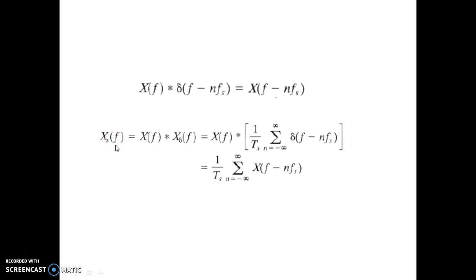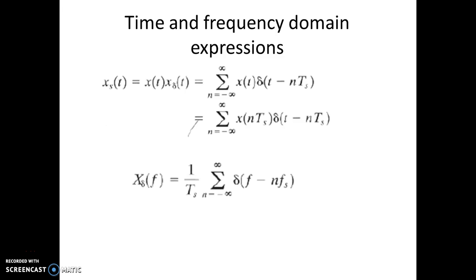xs(f) is the sampled signal—that is equal to x(f) convolution x_delta(f), which is written here. Substituting the value, we get the frequency spectrum of the sampled signal is (1/Ts) sigma n equals minus infinity to infinity x(f - nfs).